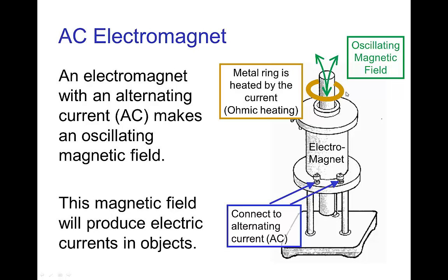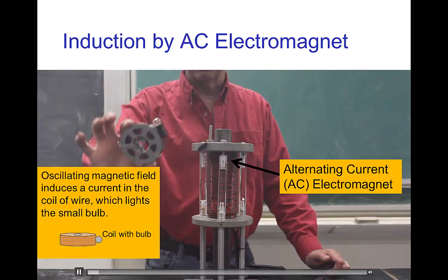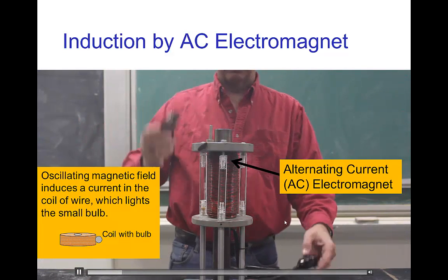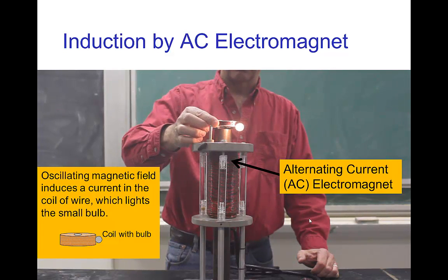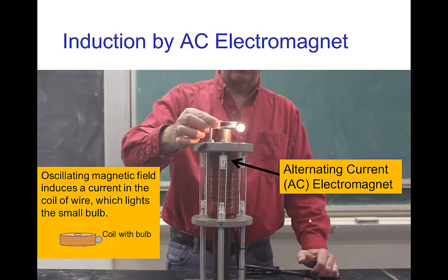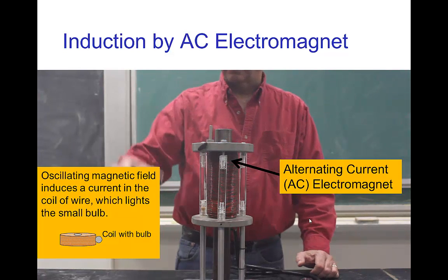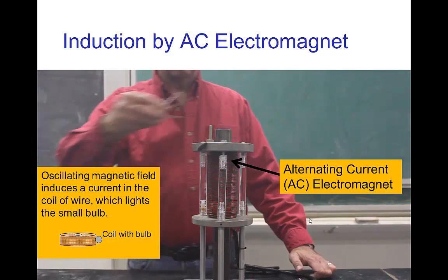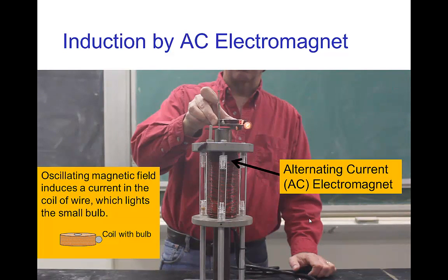Now that alternating oscillating magnetic field will produce a current in objects. So if I put a metal ring near this AC magnet, I'll notice that it starts getting hot by ohmic heating, which tells me that there's a current in that metal ring. Now I can also measure that current just by having a coil of wire with a bulb. So here I have this coil of wire with a bulb connecting the ends. I just turned on the AC electromagnet. You see that when I put the coil near the magnet, it induces a current in that coil. So that coil is just a big loop of wire with the two ends connected to the light bulb, and this AC electromagnet is inducing a current in that coil.